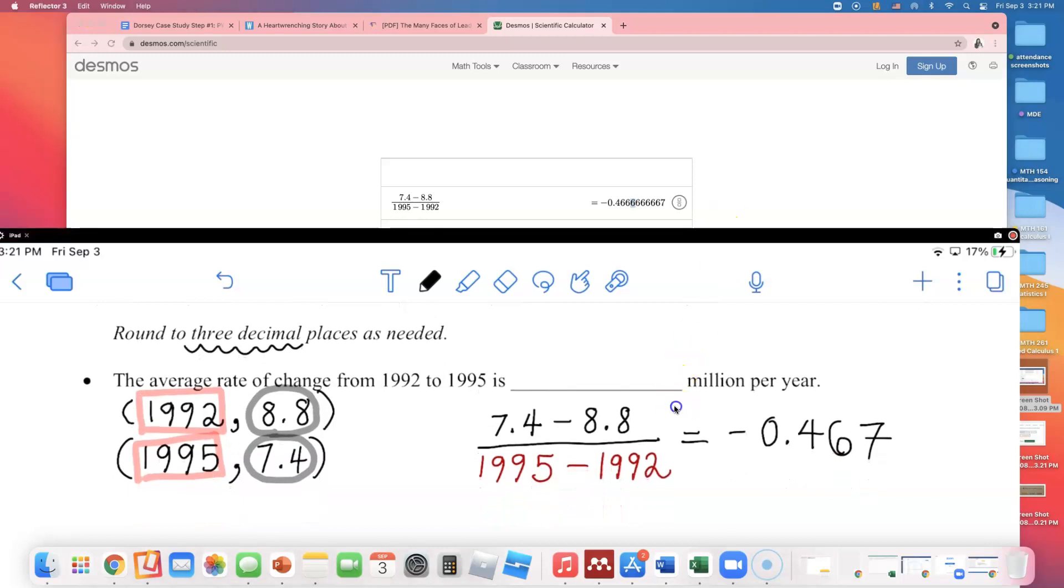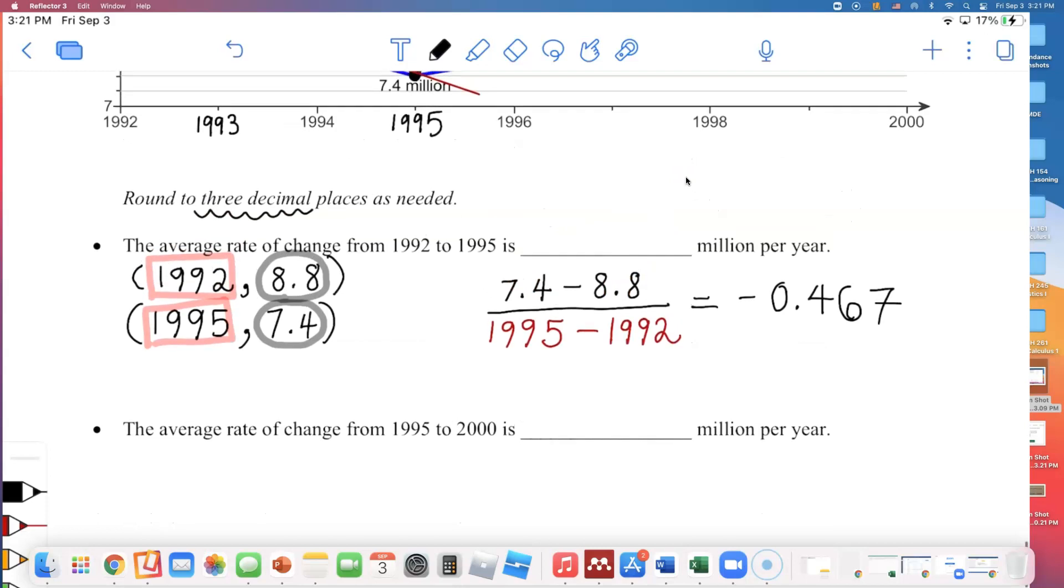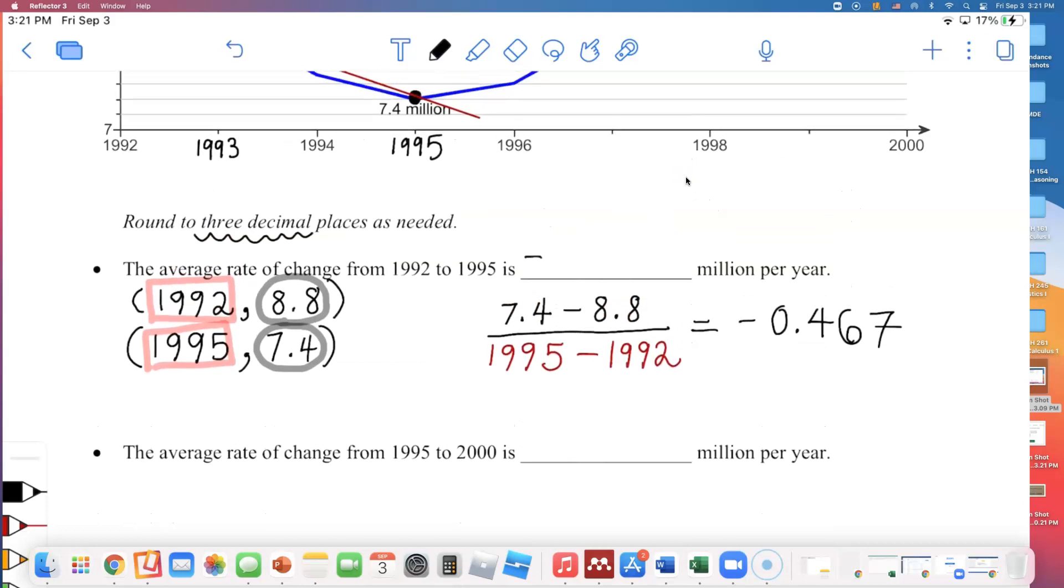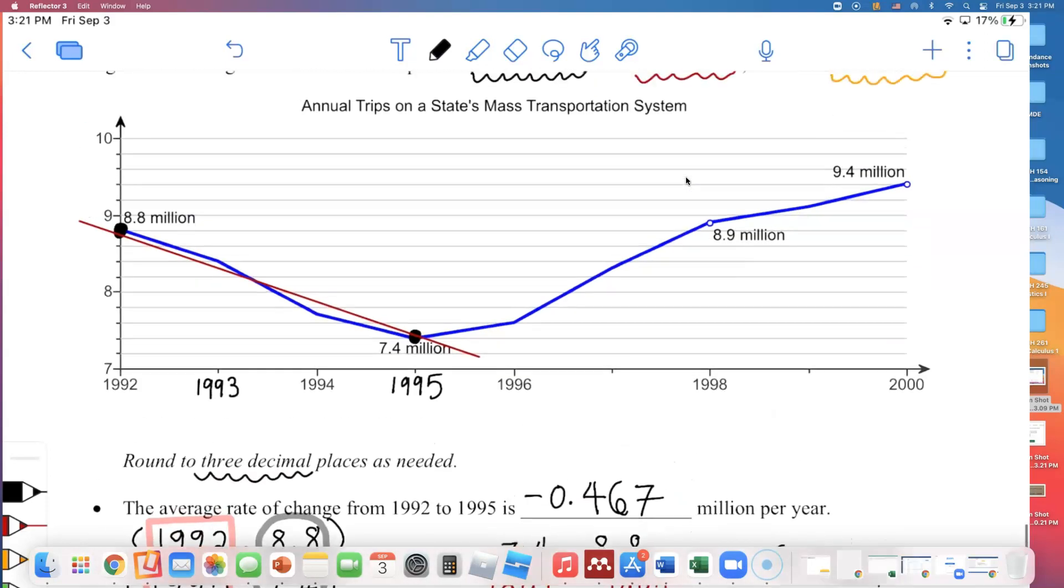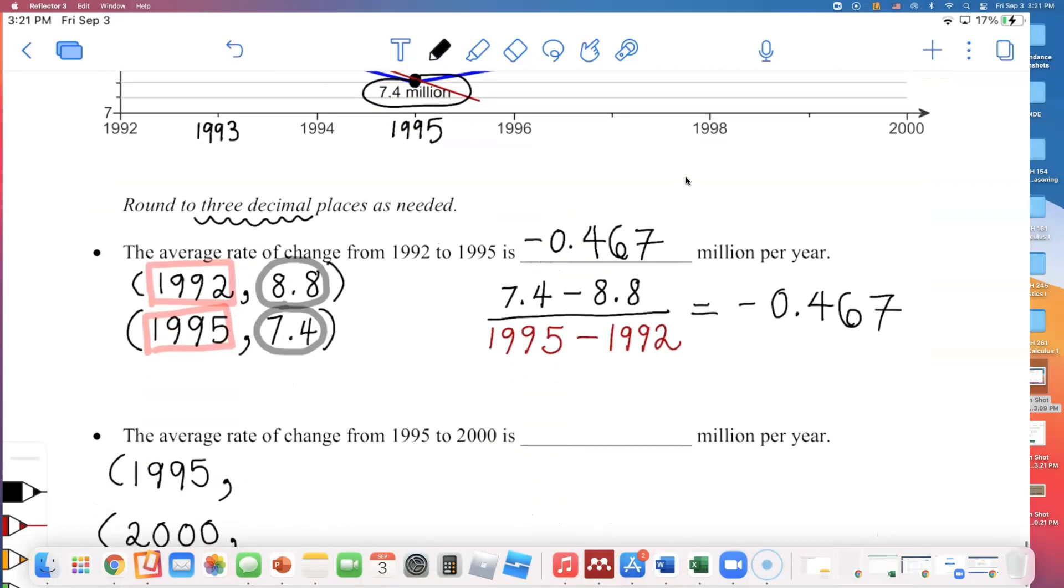The answer is, well, it's a negative number, which means the number of trips were going down by 0.467 million per year. Same thing for the next one. I need to look at the year 1995 to 2000. I will need their y values. So in 1995 there were 7.4 million trips.